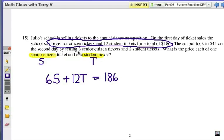Now, the other one, we got three senior citizen tickets and two student tickets for $41, right? So, let's go with 3S plus 2T, and that equals 41.